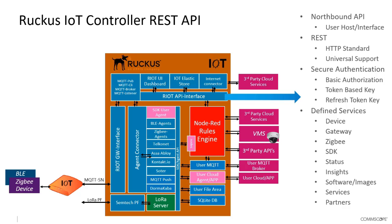The REST API interface is the northbound interface — for all traffic going upstream to the application. It is a secure interface that requires basic authorization. You will need to log in initially using the REST API basic authorization and authentication mechanism. Once you do that, you'll be issued an access token and a refresh token. All subsequent commands into the IoT controller must be encoded using the access token. After the access token expires, you can request a new one using the refresh token, meaning you don't need to go through basic authorization again.